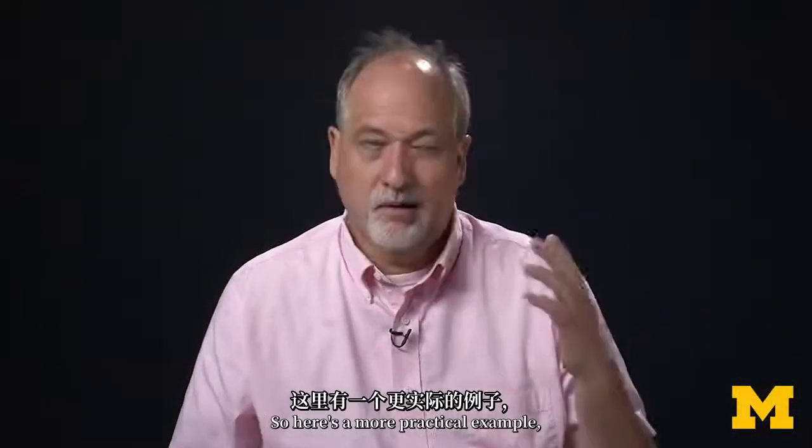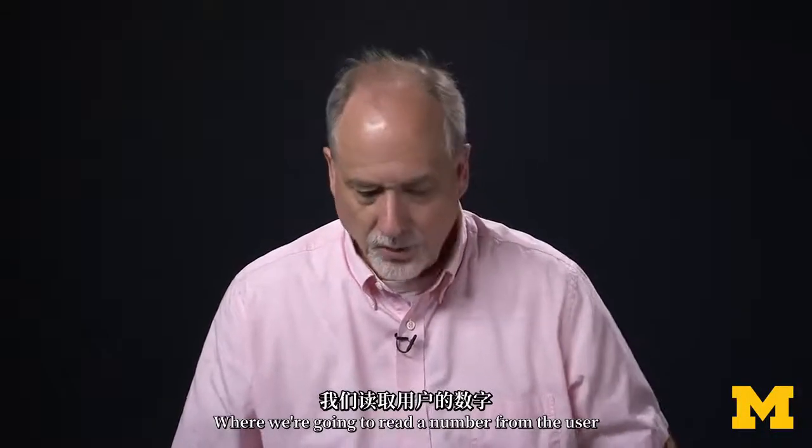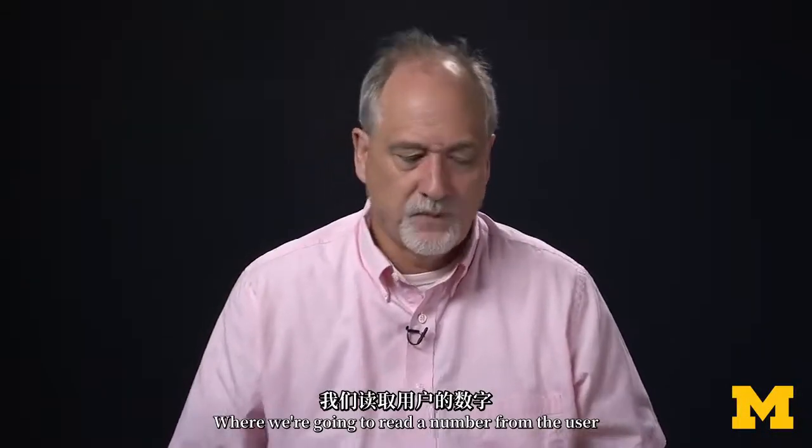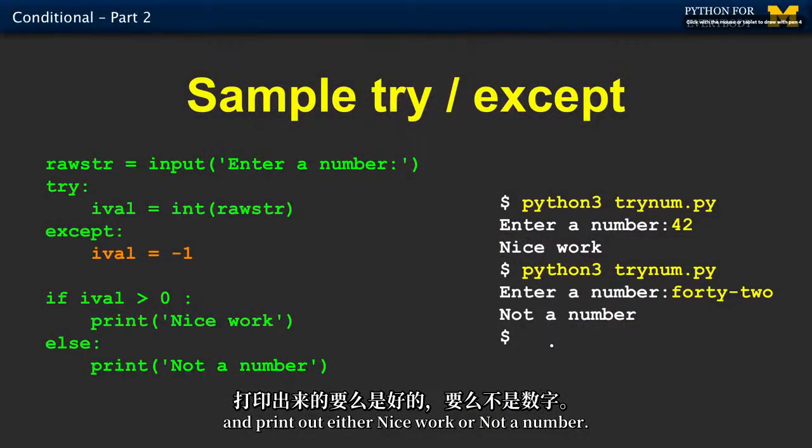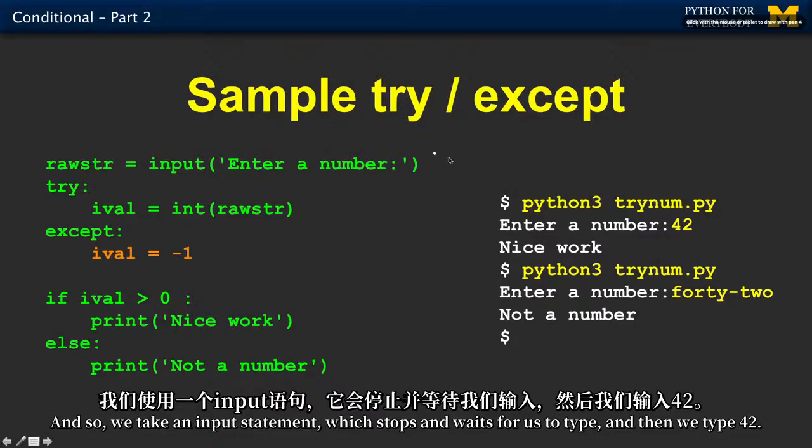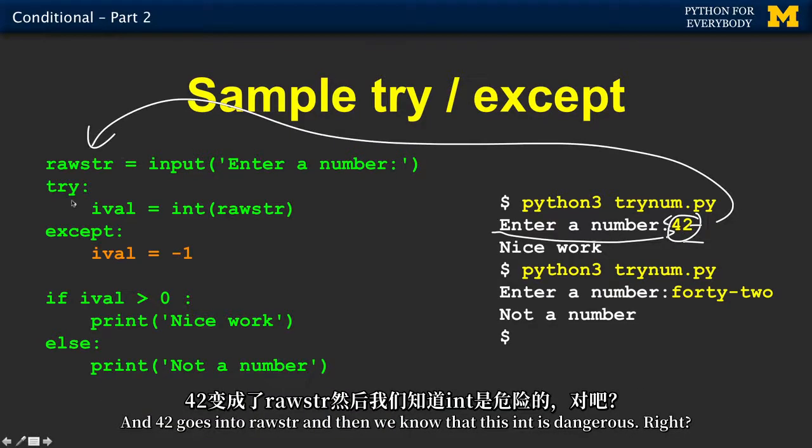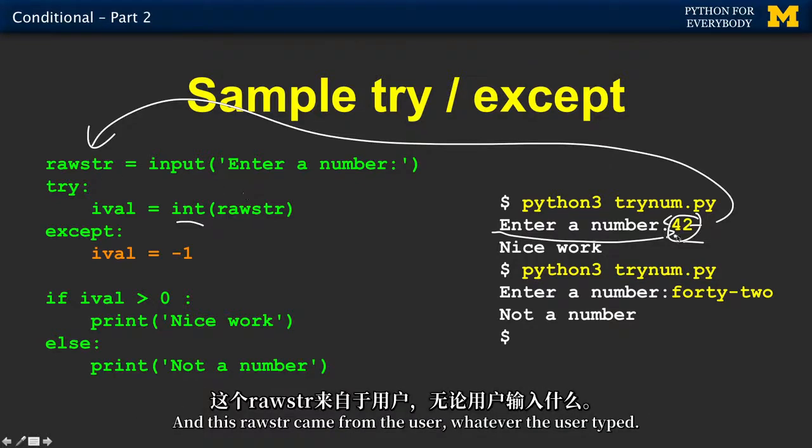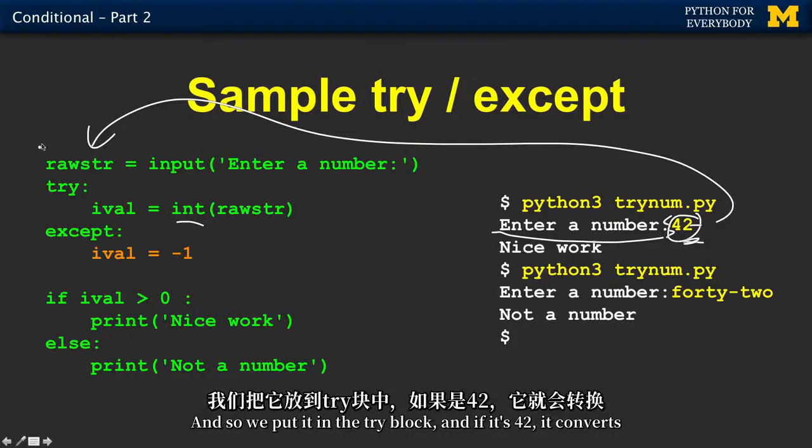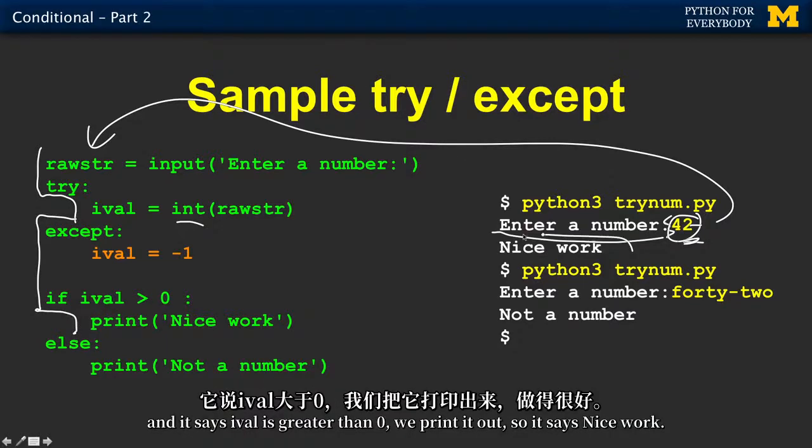Here is a more practical example where we're going to read a number from the user and print out either nice work or not a number. And so we take an input statement which stops and waits for us to type, and then we type 42, and then 42 goes into roster. And then we know that this int is dangerous, right? And this roster came from the user, whatever the user typed. And so we put it in the try block, and if it's 42, it converts. And it says IVAL is greater than zero. We print it out. So it says nice work.